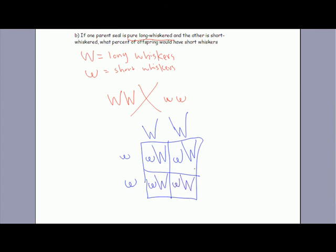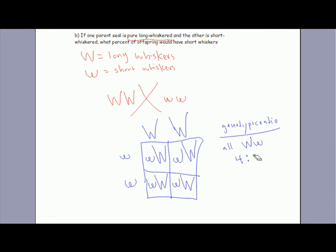Here's where the genotypic and phenotypic ratios are the same but a little bit different. Do we only have one type of genotype? Someone raise your hand and tell me. Big W, little W. So we have all big W, little W. You can just write that for now. Four to zero? No, they're all big W, little W — does that make sense, everybody?